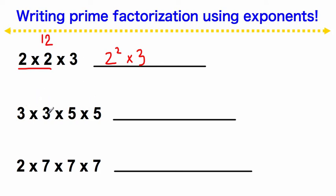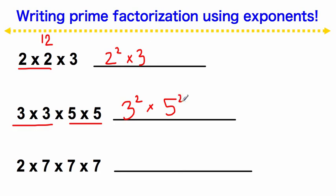For 3 times 3 times 5 times 5: we've got two 3s, so we write 3 to the second power, because there are two of them, times 5 to the second power, because there are two 5s. For this last example, we just have one 2, so we write just 2, times 7 to the third power, because there are three 7s.